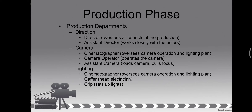Production departments include direction, camera, and lighting. The director, along with any assistant director, oversees all aspects of the production — looking at everything at the macro level, every corner and every movement. The cinematographer oversees camera operation and the lighting plan. Lights indicate and may even symbolize something for a scene. The camera operator operates the camera, and having assistant camera operators provides backup when needed.